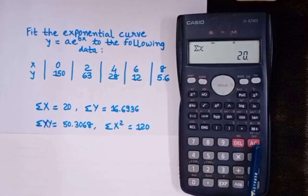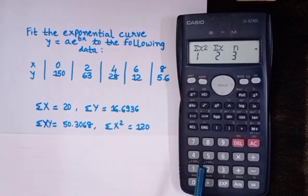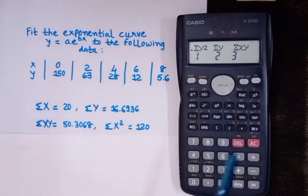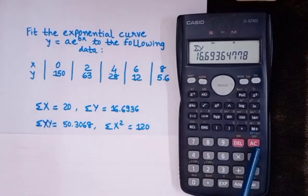Then press shift 1. Find sigma y, so press 1, then press equal to. We're getting 16.6936.